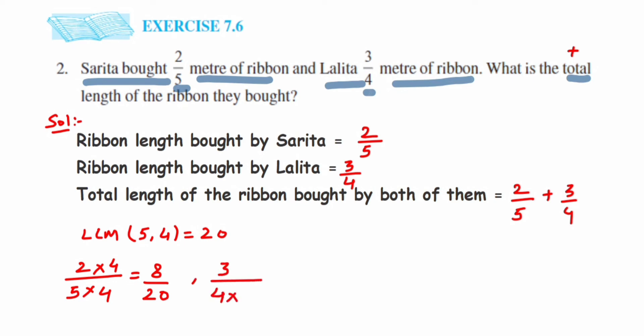Similarly, 3/4: with 4, what should we multiply to get 20? It's 5. Multiply 5 in the numerator and denominator. We'll get 15/20.